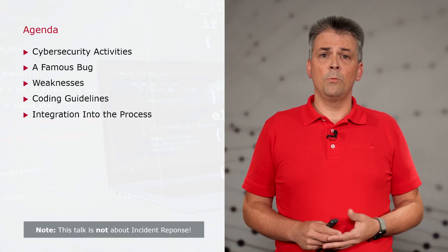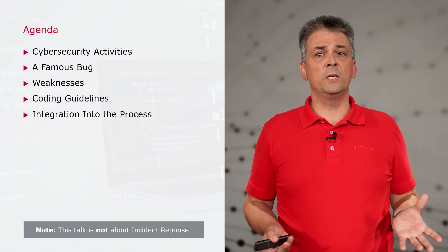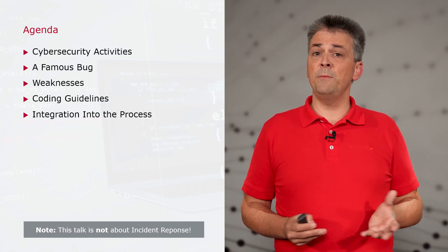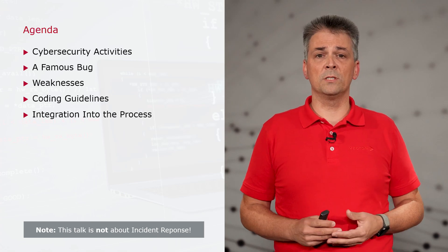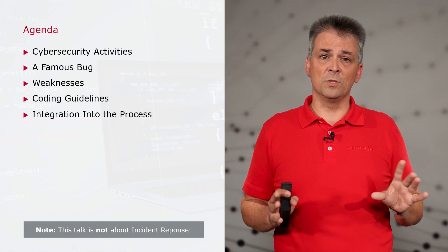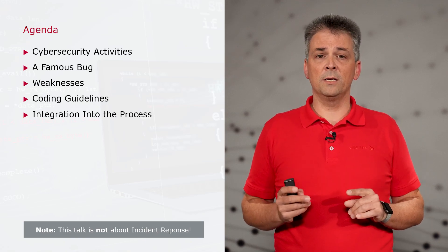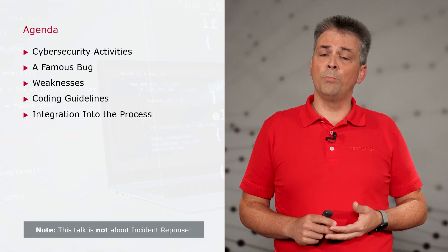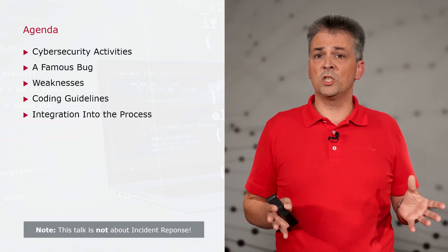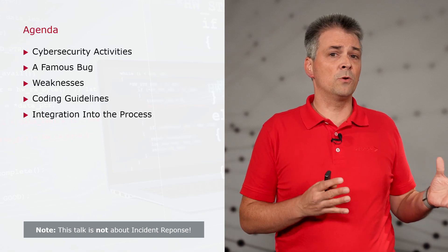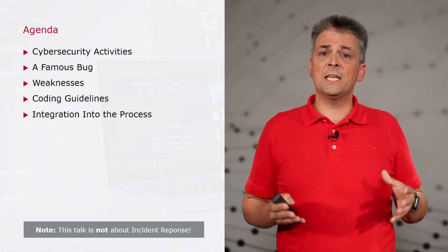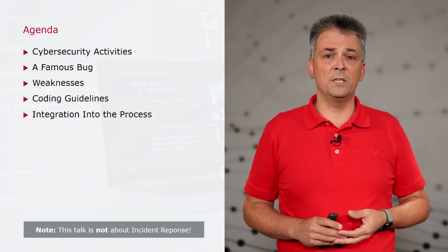For that, first, we will take a short look at the cybersecurity activities that are required for security-relevant products. Then, an example in the form of a famous bug will illustrate the importance of these cybersecurity activities. Short disclaimer: this is not about incident response. We will talk about what caused the bug, because this will take us to the meaning and importance of weaknesses. For better classification, a comparison of the check for weaknesses to the application of coding guidelines, namely Cert C, is also drawn. And finally, we will take a look at how this can be integrated into the development and release process.